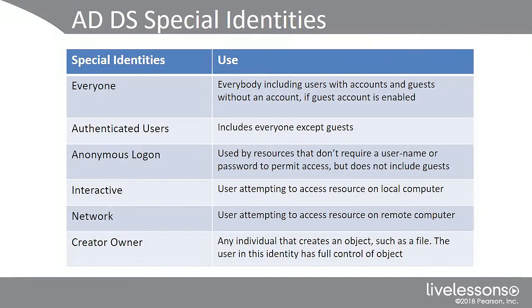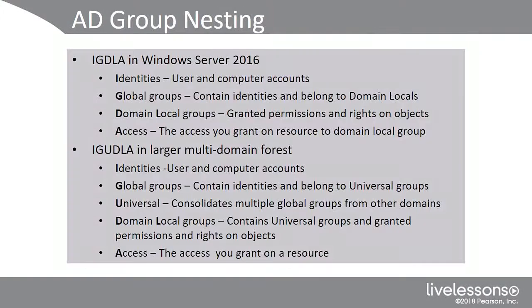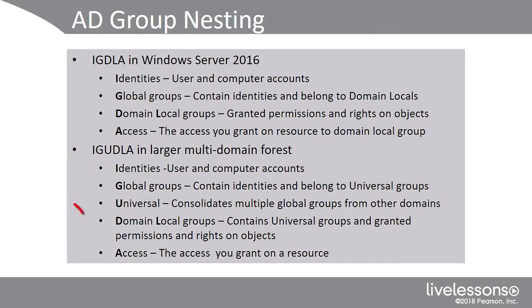When it comes to AD group nesting, we use the acronym IGDLA. I is for identities, G is for global groups, DL is for domain local groups, and A is for access. For a larger multi-domain forest, we introduce another letter to get IGUDLA, where the universal group consolidates multiple global groups from other domains before going into the domain local group.